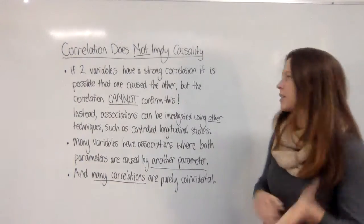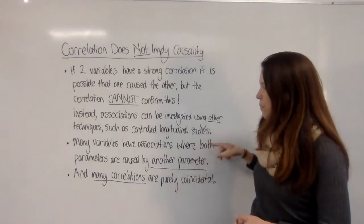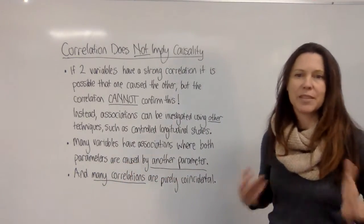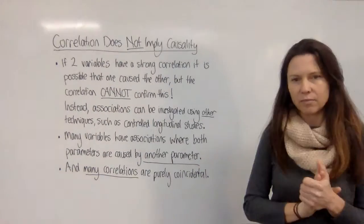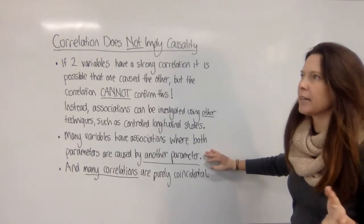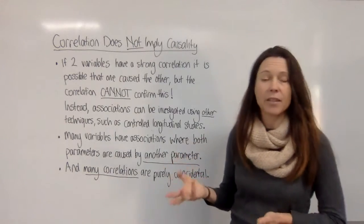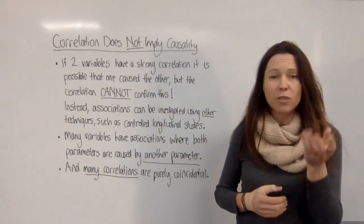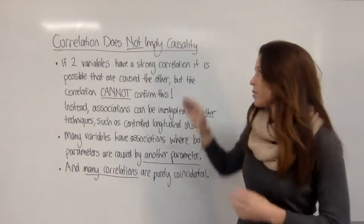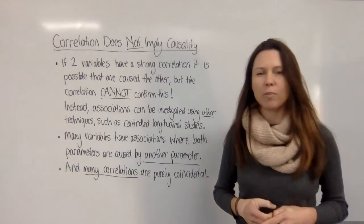Another reason we can't imply causality just because two variables are correlated is that both parameters may be caused by some other parameter or set of parameters. For example, somebody might find a correlation between the number of dental caries — holes in the teeth — and the incidence of diabetes. Having holes in your teeth doesn't give you diabetes, and having diabetes doesn't give you holes in your teeth, but both could be caused by a poor diet.